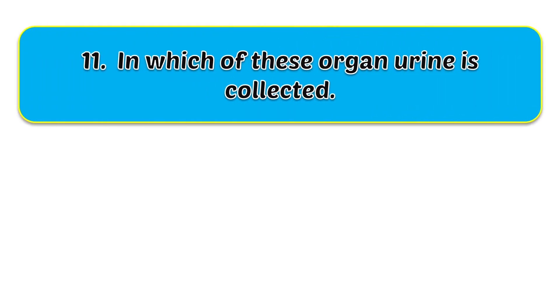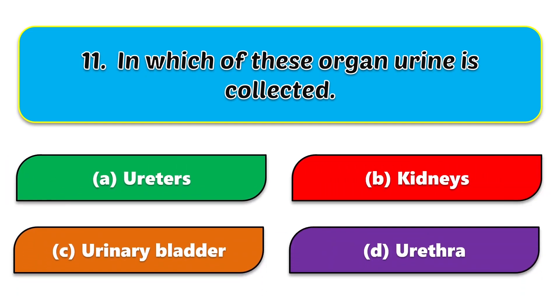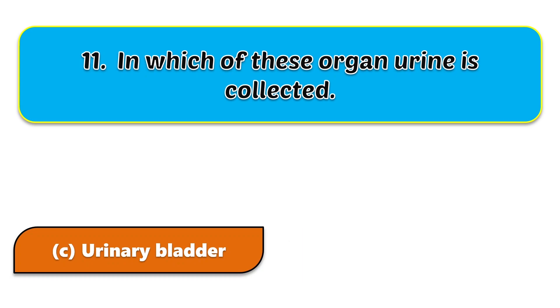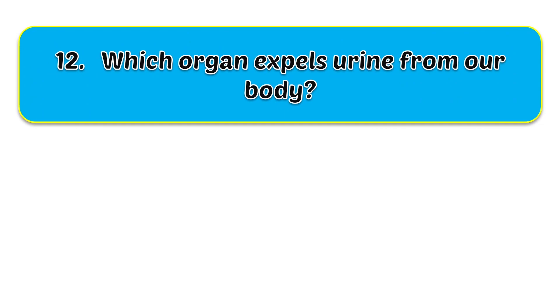Eleventh question: in which organ is urine collected? The options are ureters, kidneys, urinary bladder, and urethra. The correct answer is urinary bladder.